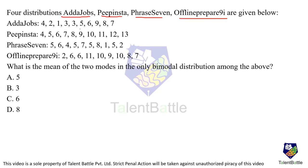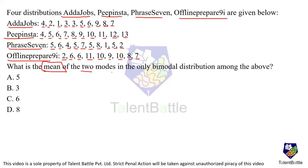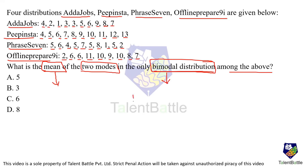The data is: Other Jobs: 4,2,1,3,3,5,6,9,8,7. PeepInsta: 4,5,5,6,7,8,9,10,11,12,13. Fresh: 7,5,6,4,5,7,5,8,1,5,2. Offline Prepare: 9,2,6,6,11,10,9,10,8,9. The question asks: what is the mean of the two modes in the only bimodal distribution?